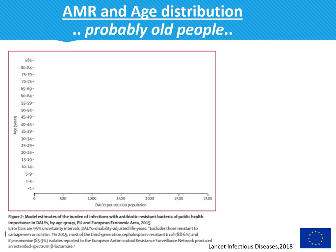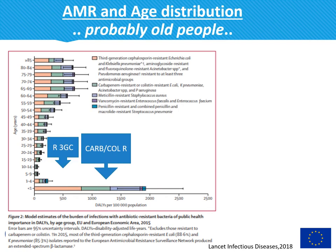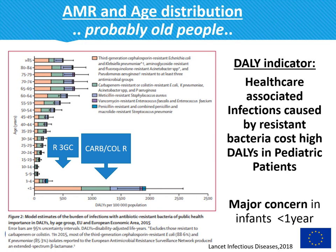What about antimicrobial resistance and age distribution? We always think that these affect probably all people. However, using again this metric DALYs, we can see that healthcare-associated infections caused by resistant bacteria cause high DALYs especially in pediatric patients. There is a major concern in infants less than one year.